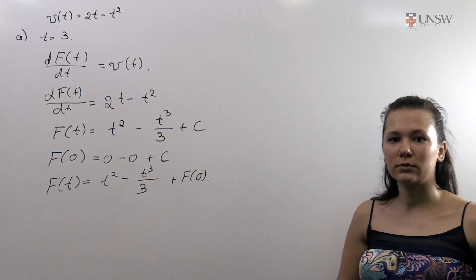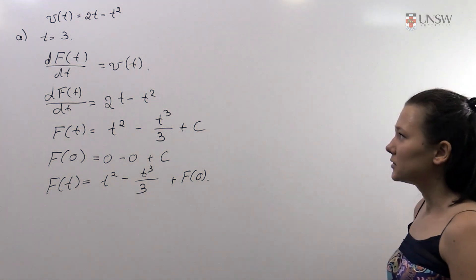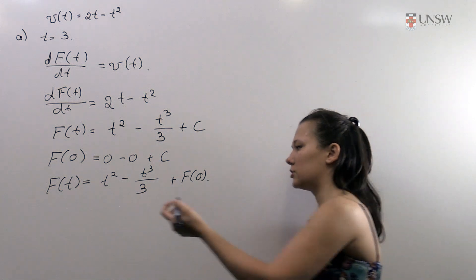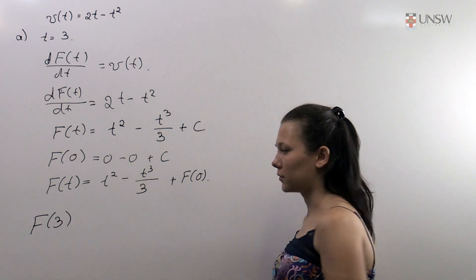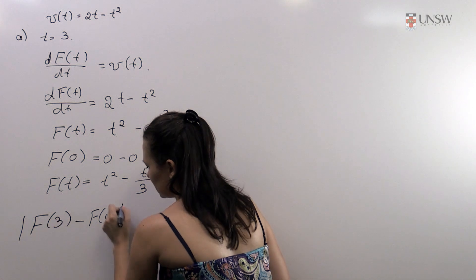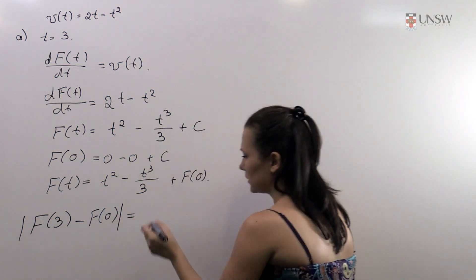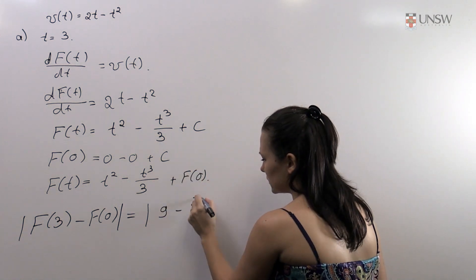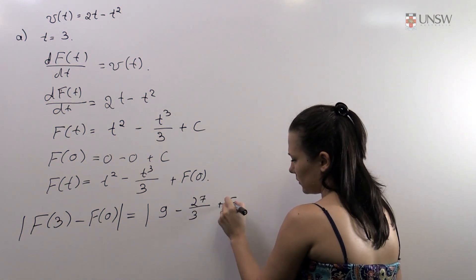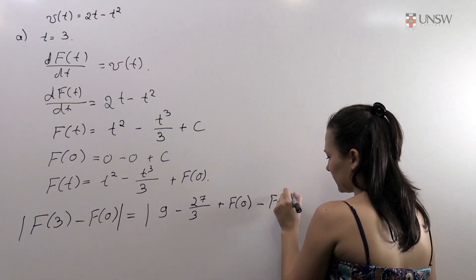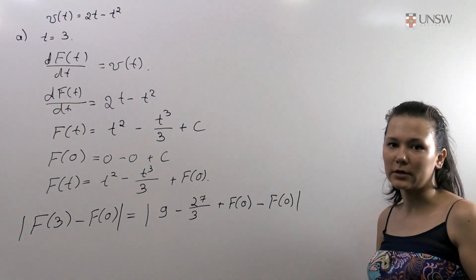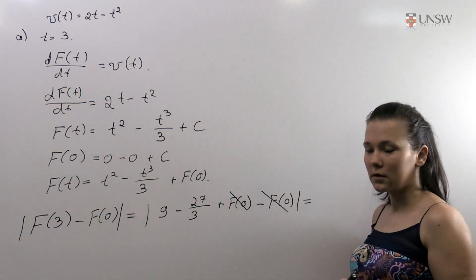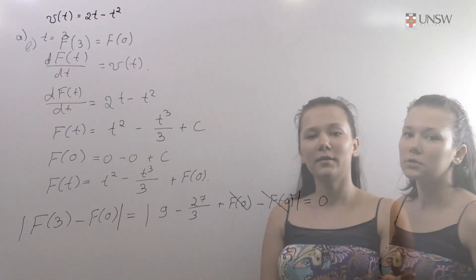It's just some constant and we do not know where the particle was at the beginning. But to find the distance between the starting point f(0) and the point where the particle is at t equals 3, we just find f(3), subtract f(0), and take the absolute value. Substituting into f(3): 3 squared is 9, minus 3 cubed over 3 is 27 over 3, plus f(0), minus f(0). The f(0) terms cancel out, and we have 9 minus 27 over 3, which is 9 minus 9, equals 0.